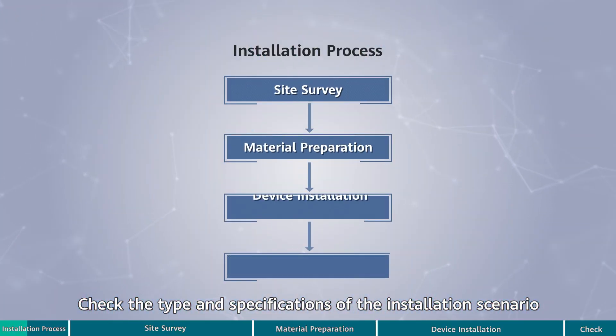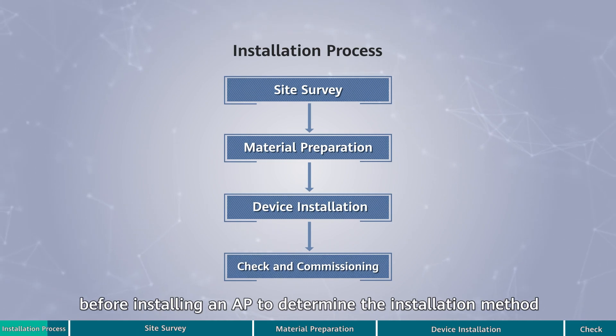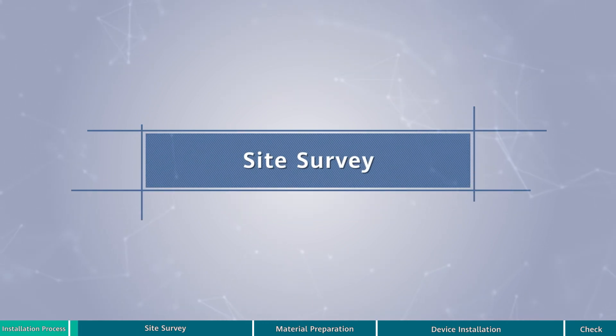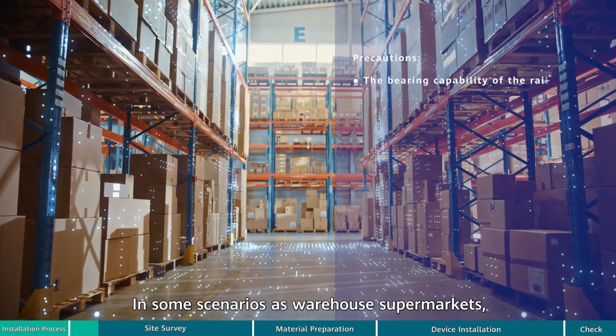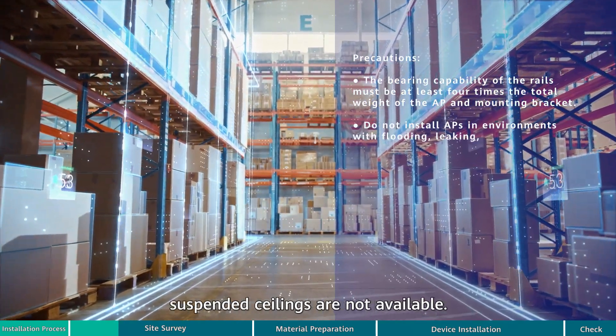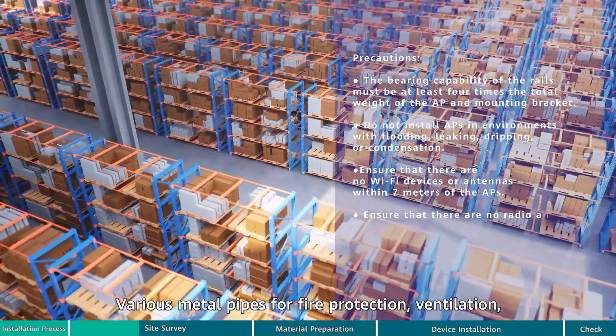Check the type and specifications of the installation scenario before installing an AP to determine the installation method and required materials. In some scenarios as warehouse, supermarkets, factory buildings, and garages, suspended ceilings are not available.